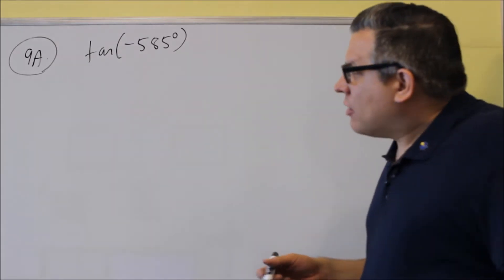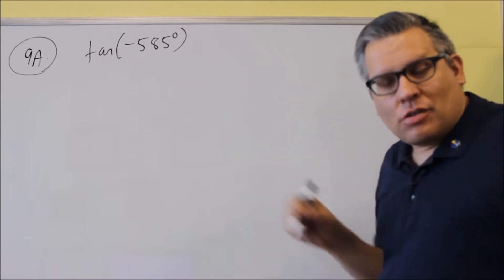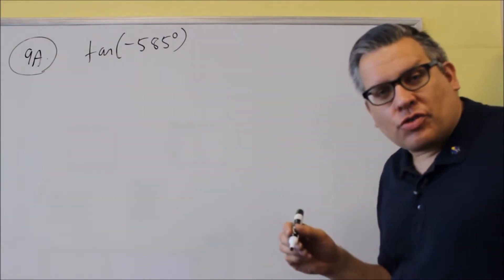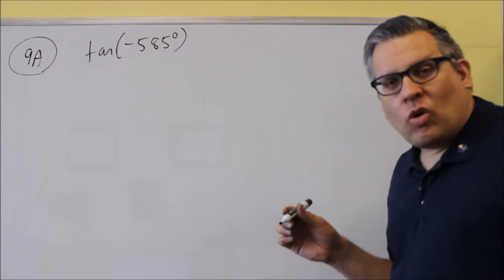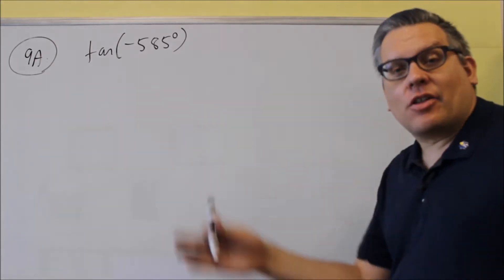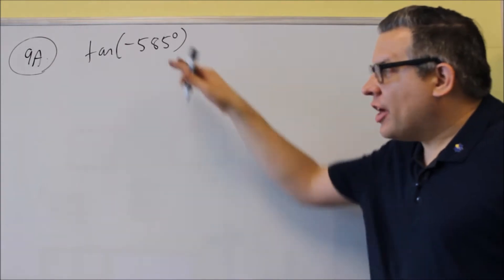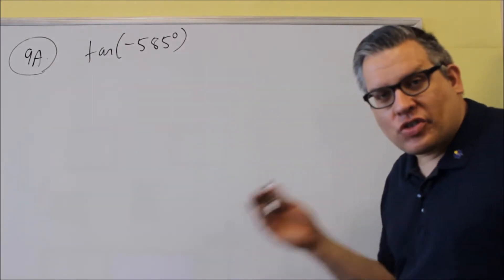We can do that by adding revolutions around. One revolution is 360 degrees. We're going to start with this angle, keep adding 360 until we get it to be a positive angle, and then we'll stop.